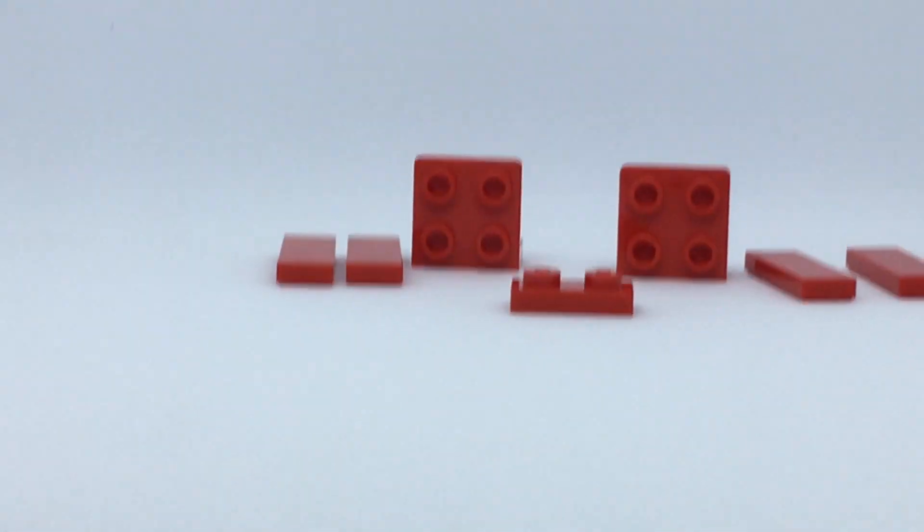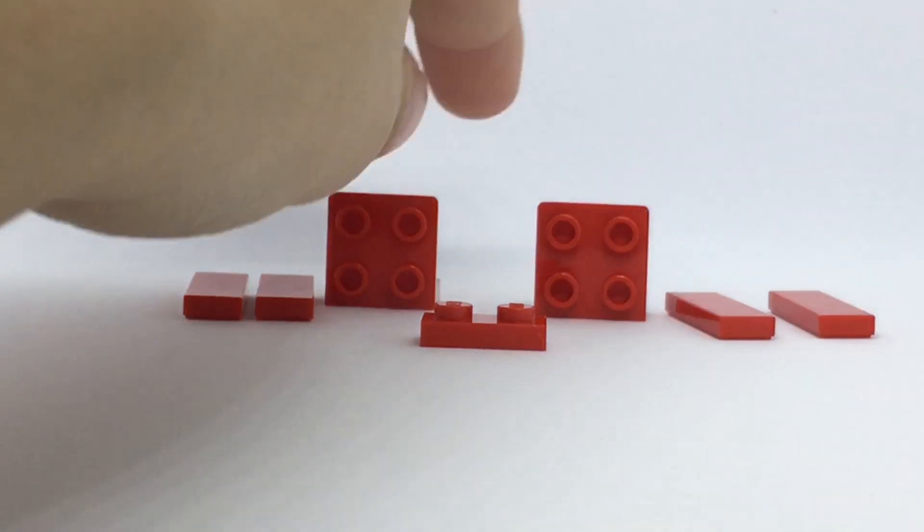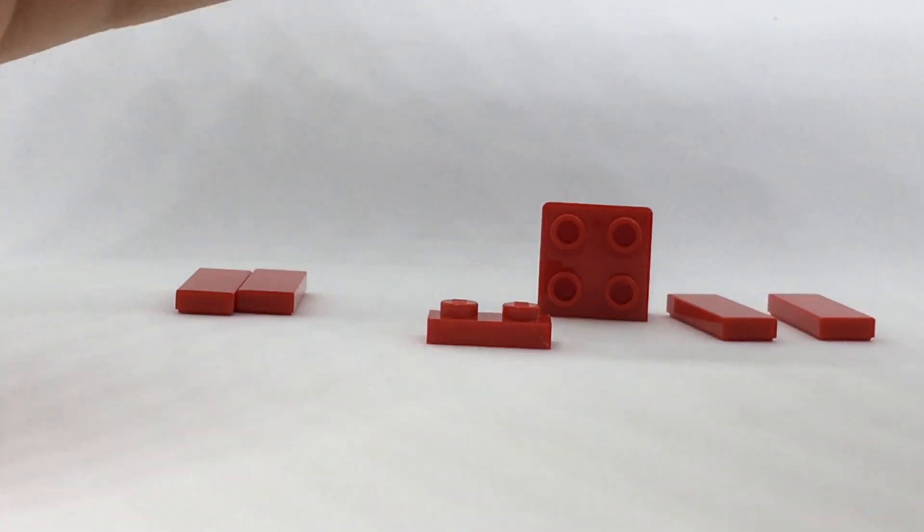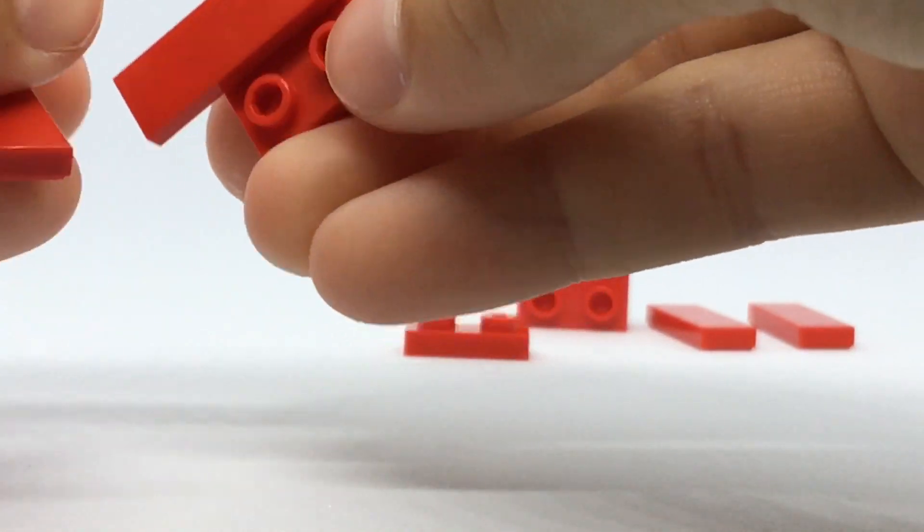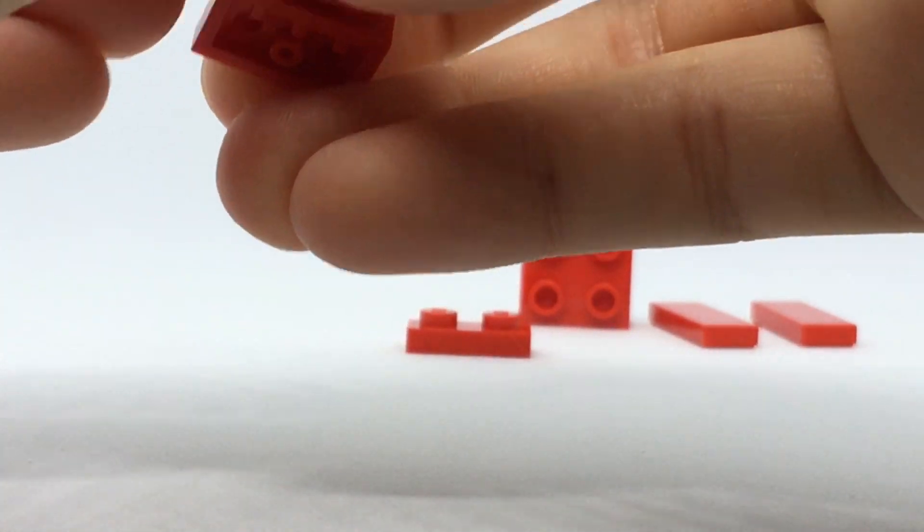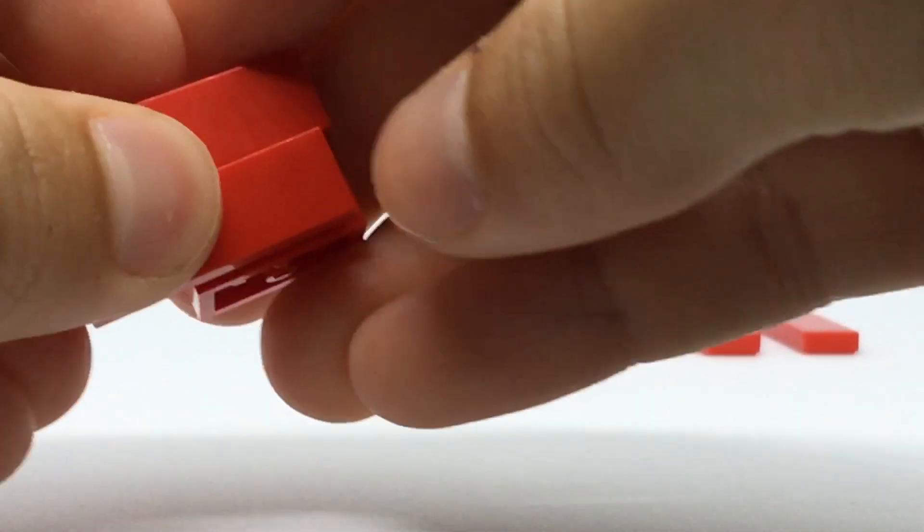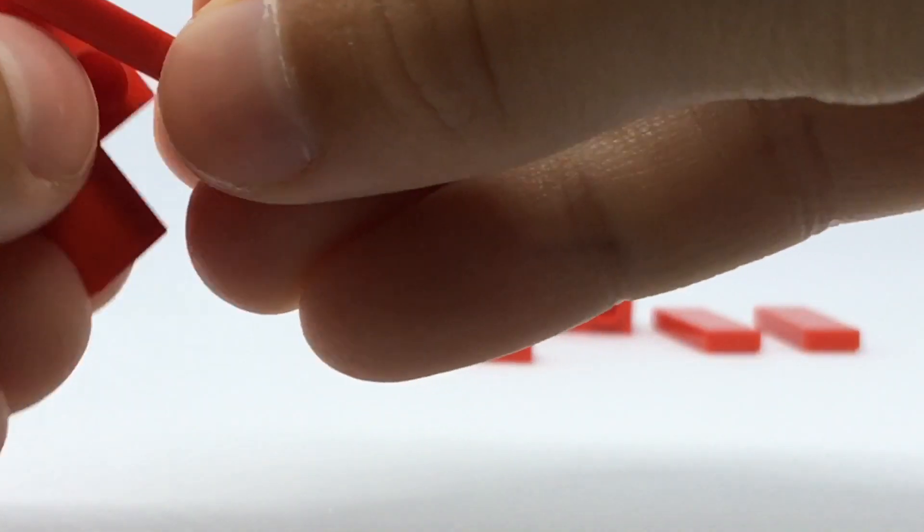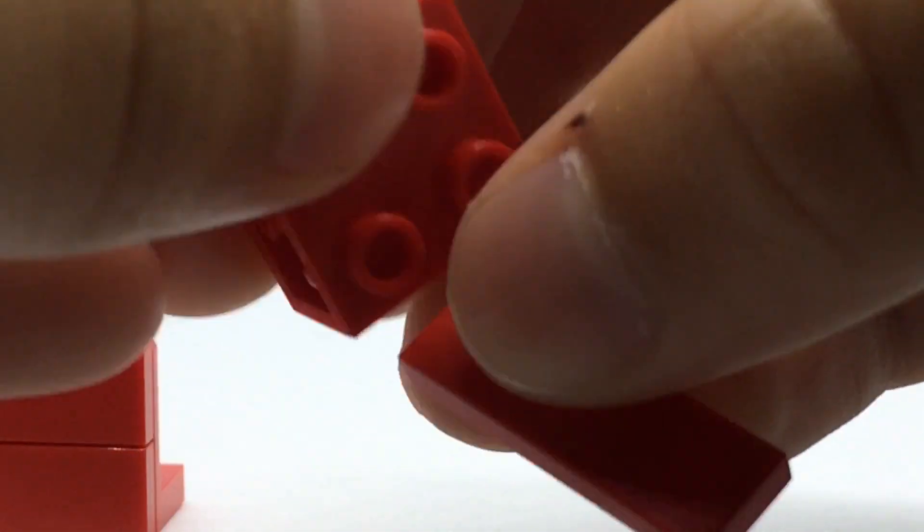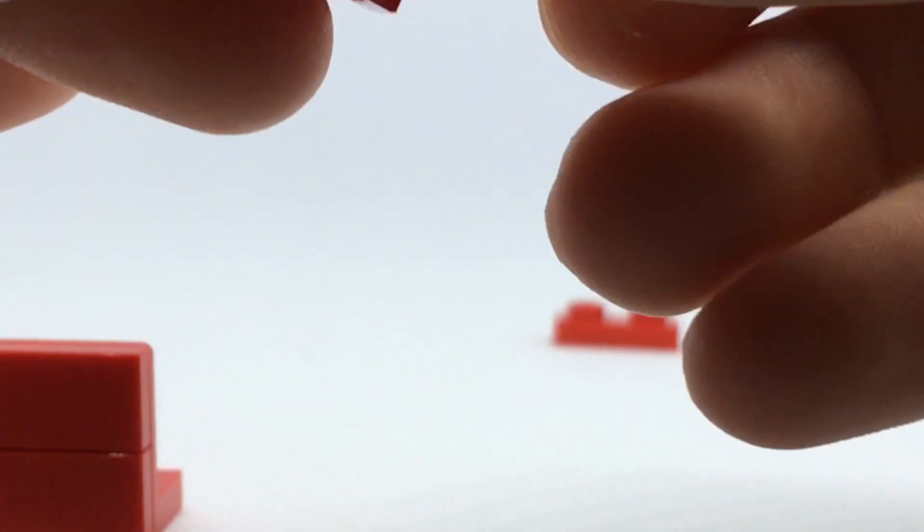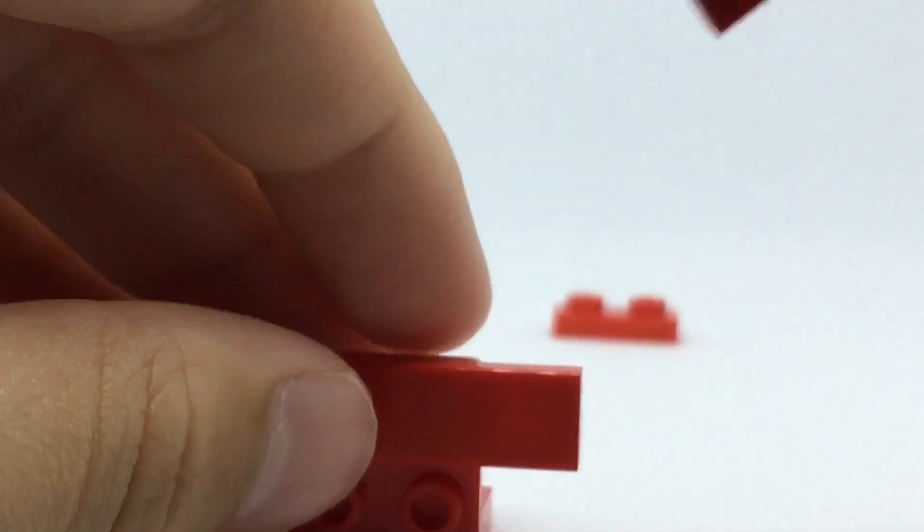Here are the pieces you will need for the first section. First you want to get this piece. You can just put these across the side like that. Next you want to get these pieces. Do the same thing but on the opposite side.